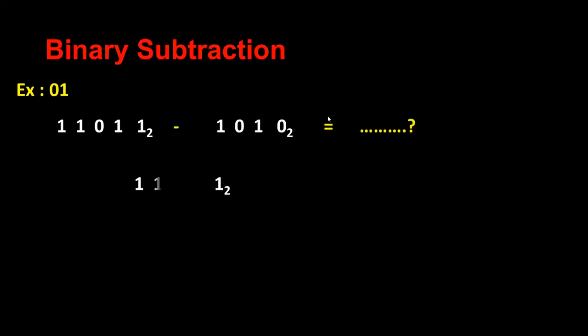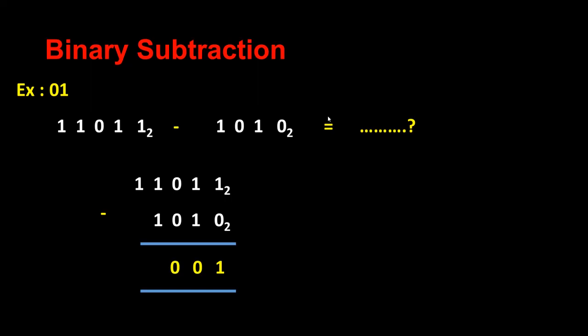What's the answer? I'm going to write like this. 1 minus 0 answer is 1, 1 minus 1 is 0, 0 minus 0 is 0, 1 minus 1 is 0, and then again 1. So my answer is 1 0 0 0 1.